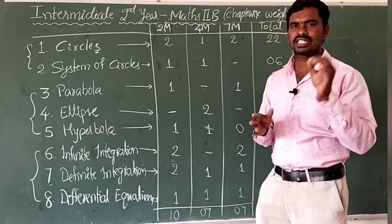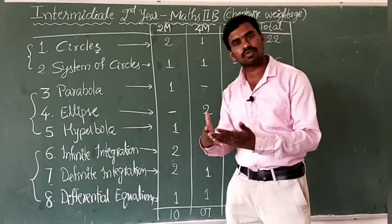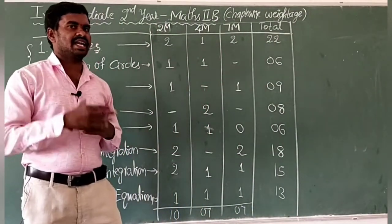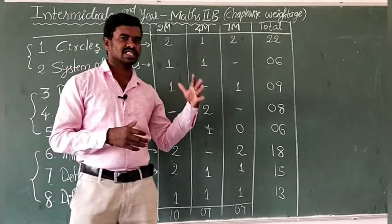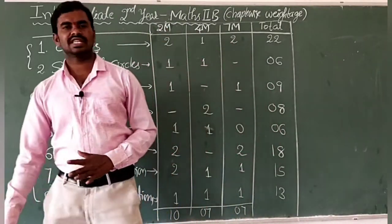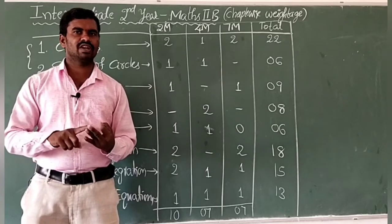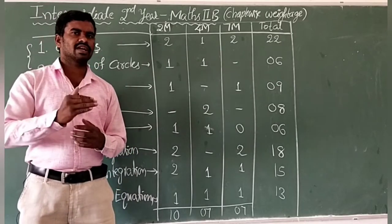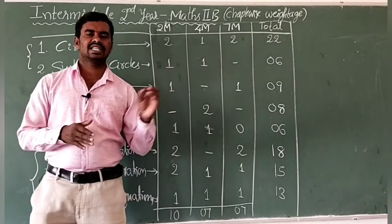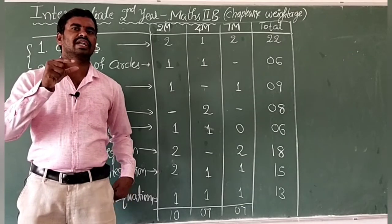If you want to get 75 out of 75, just follow our classes regularly. I will start from Circles and tell you which are important — which are 2-mark, 4-mark, and 7-mark questions. I've worked hard for six to eight years on Maths 1A, 1B, 2A, and 2B. All classes are available on the Model Maths YouTube channel by Nagraj Sir, including 10th class videos. Every chapter is organized as a playlist so you can find any chapter quickly.